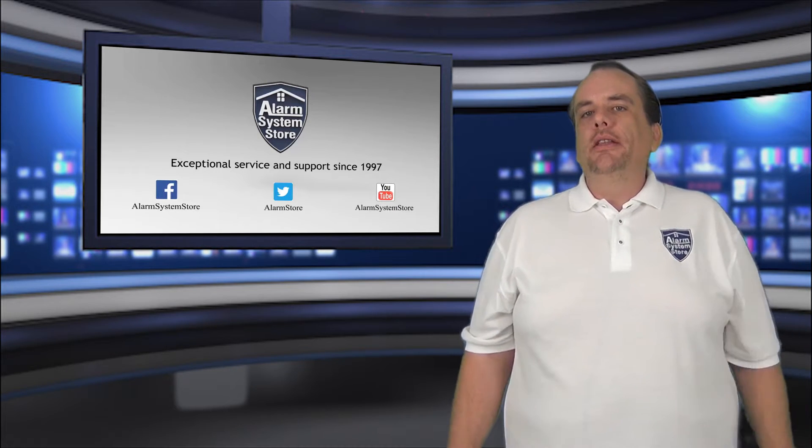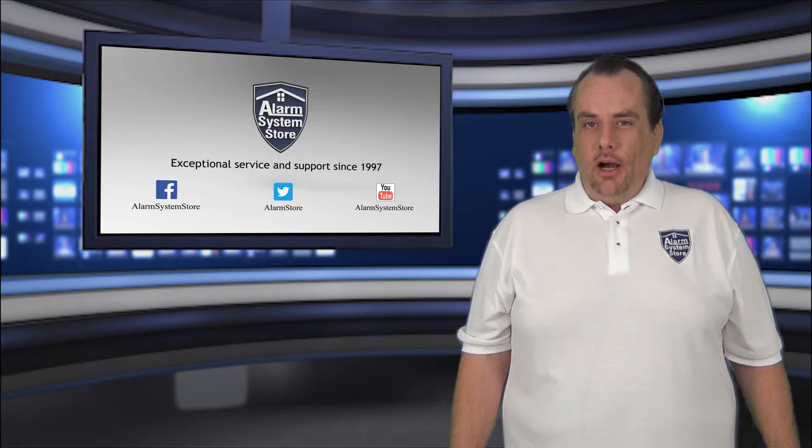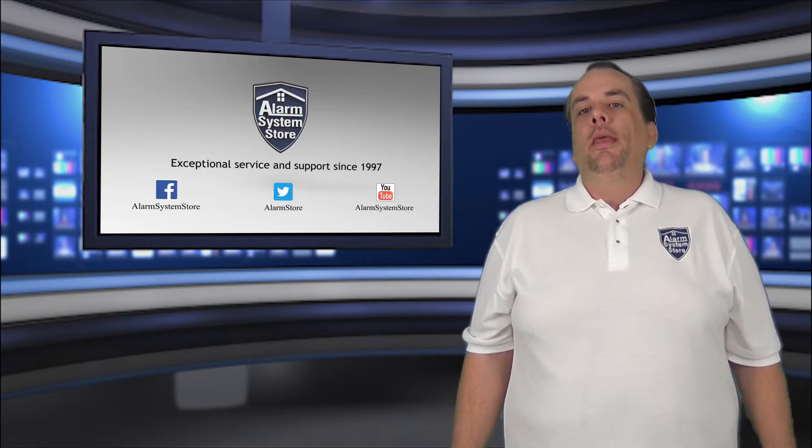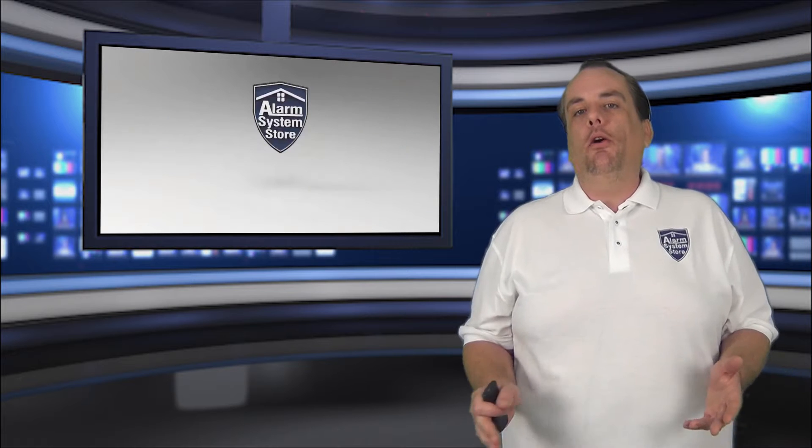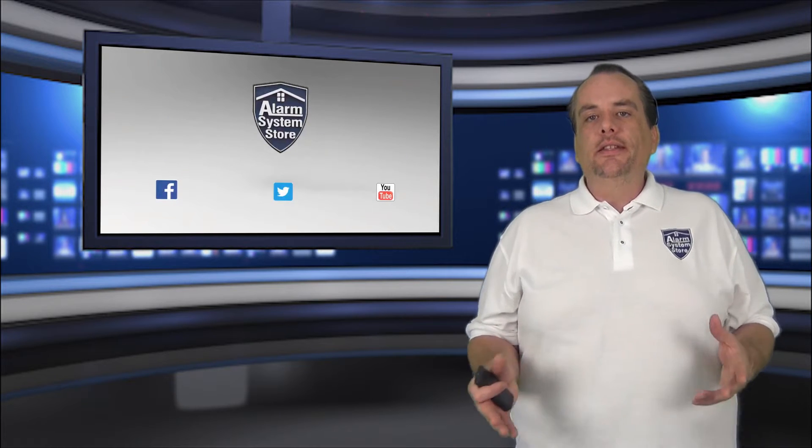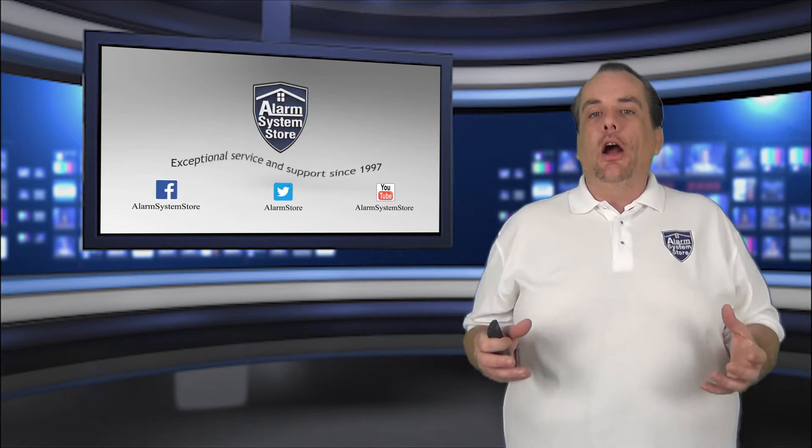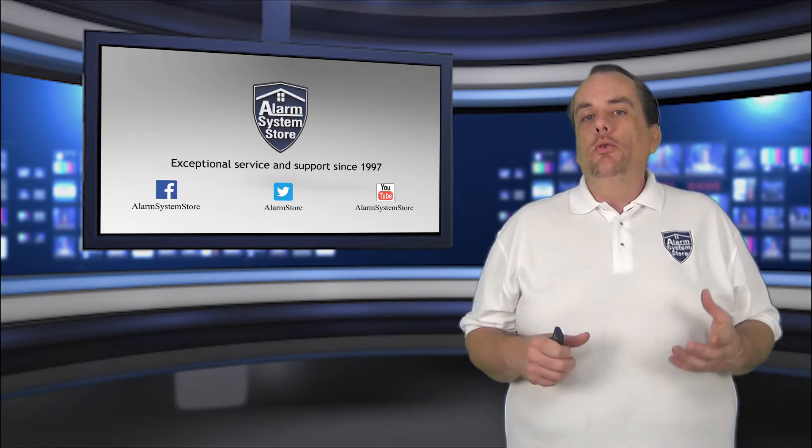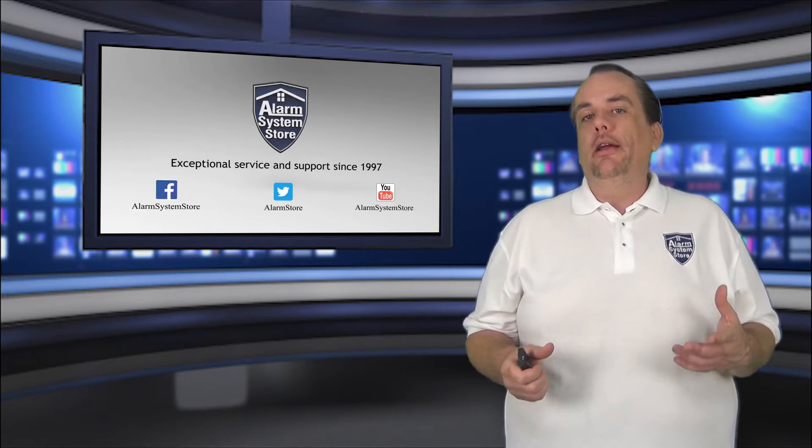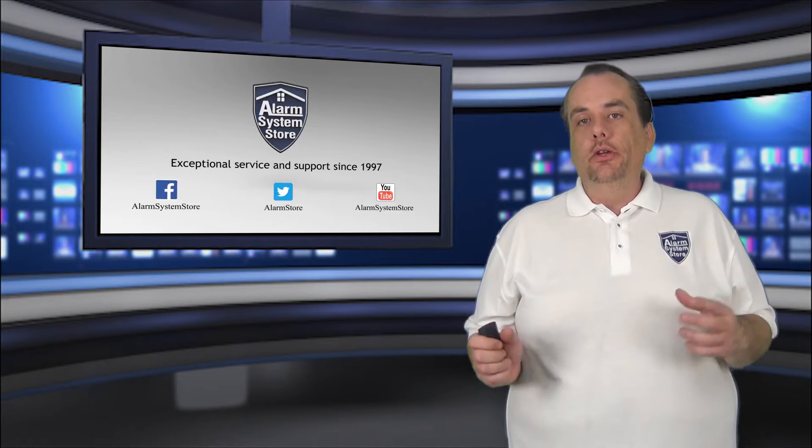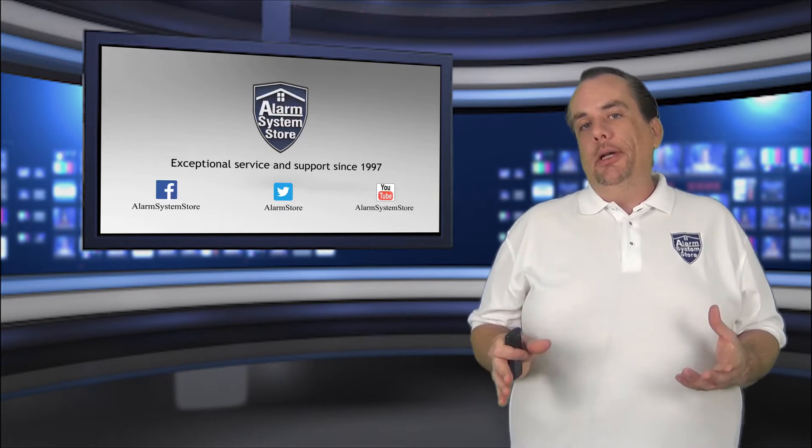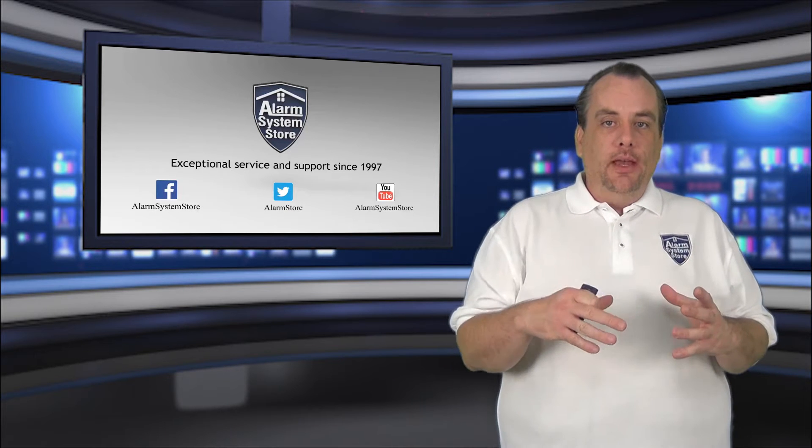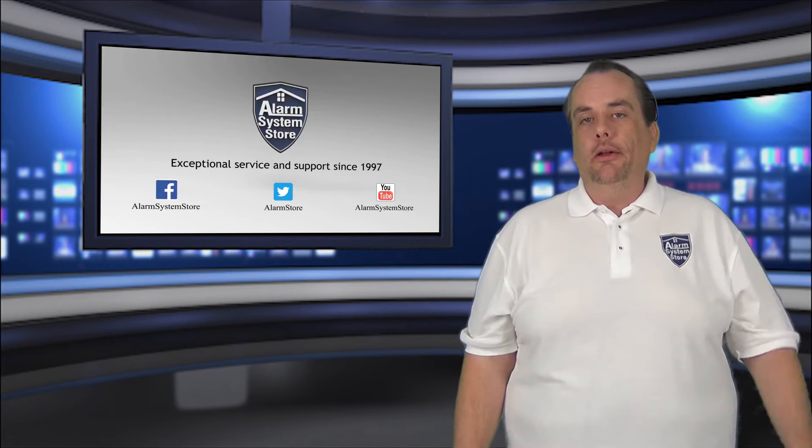They are the System Sensor smoke and carbon monoxide combination units and you can get them in either two wire or four wire variety. What this does is it takes a smoke detector and a carbon monoxide detector and combines them into one unit and you also have to have an intermediary module to use these. So you will have the smoke and carbon monoxide detectors connected to a module and then the module will connect to your alarm panel.